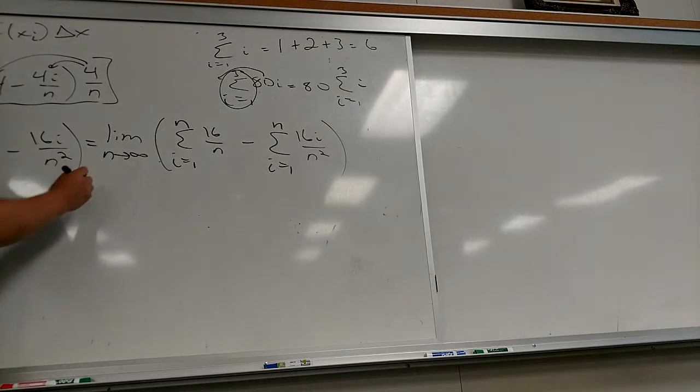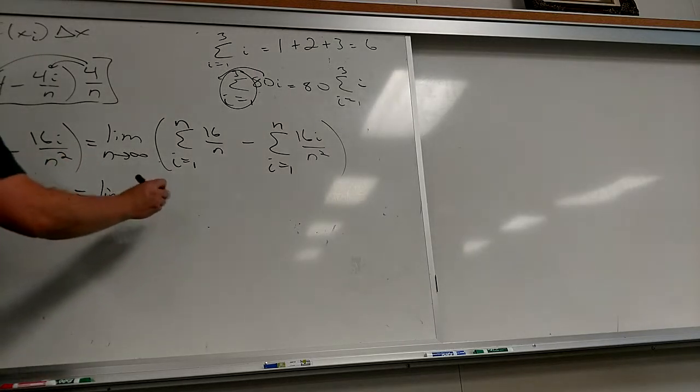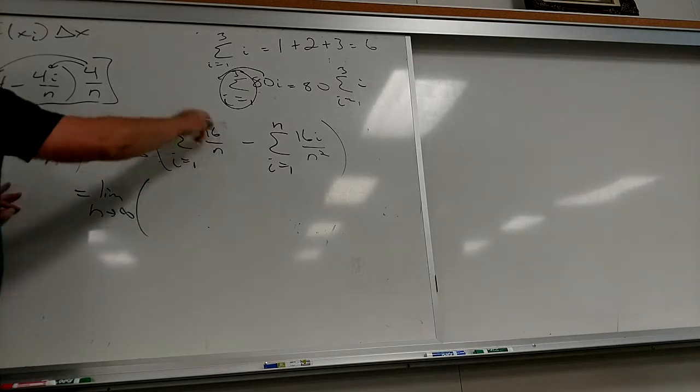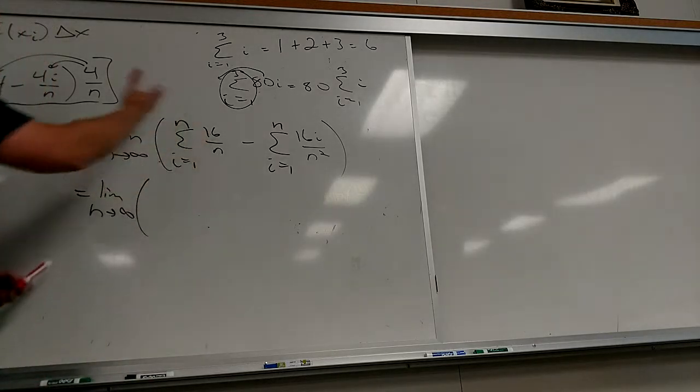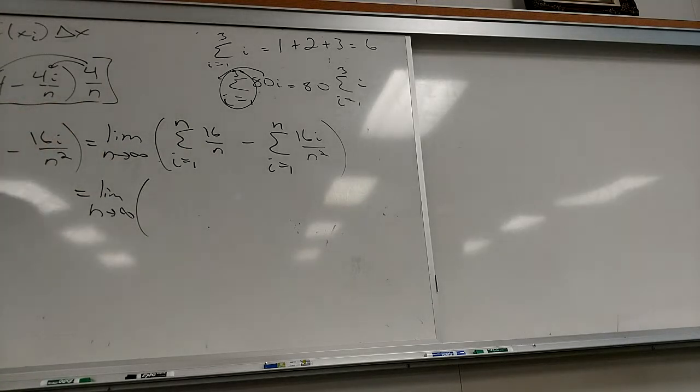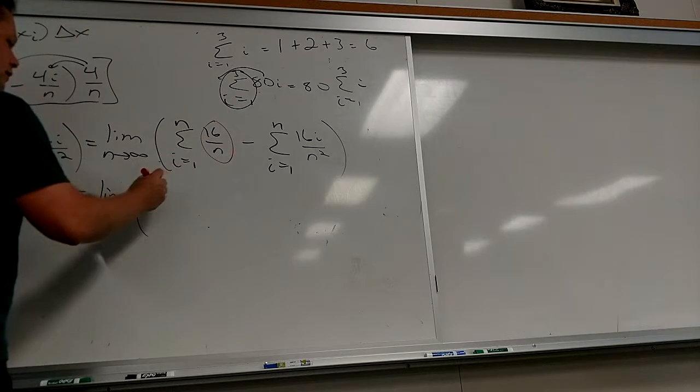So look what I can do here. For this guy right there, what can I factor out? I can actually... What can I take out in front of the summation symbol? Anything that doesn't have an i in it, because that's the only variable it sees. So I can actually take 16 over n out.